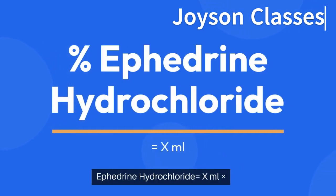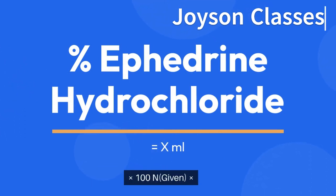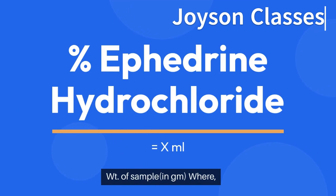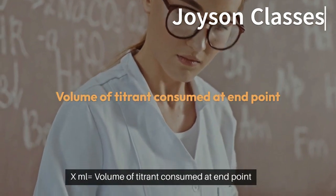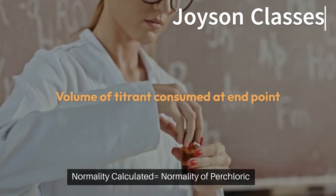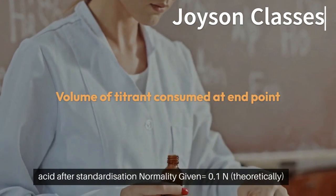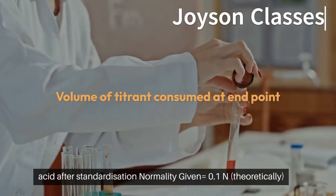Calculations — Percent ephedrine hydrochloride equals: volume of titrant consumed (mL) × normality calculated × 0.02017 × 100, divided by the weight of sample in grams. Where normality calculated is the normality of perchloric acid after standardization, and normality given is 0.1N theoretically.